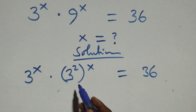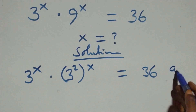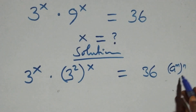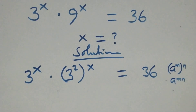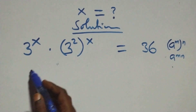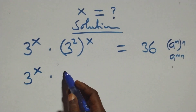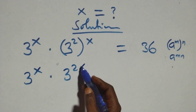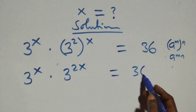The next step here follows when we have a raised to power n, raised to power m — this is the same thing as a raised to power m·n. So the powers multiply, and we have 3 raised to power x times 3 raised to power 2x equals 36.